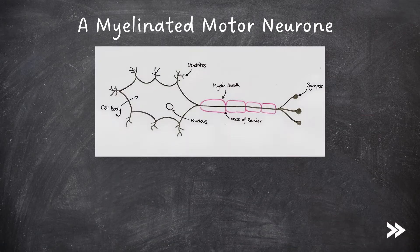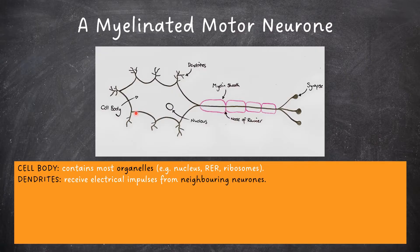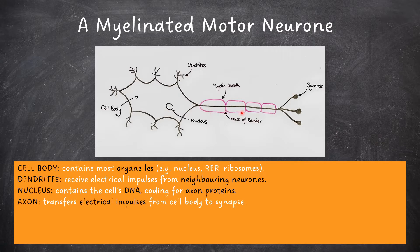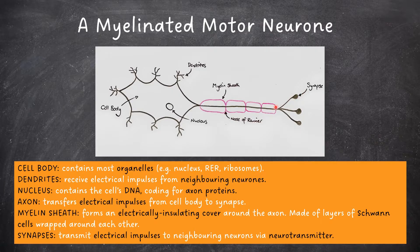First of all, we need to know the structure of a myelinated motor neurone. Here on the left we have the cell body which contains the most organelles such as the nucleus, the rough endoplasmic reticulum, and ribosomes. At the sides of the cell body we have things which look like tiny fingers called dendrites. Dendrites receive electrical impulses from neighbouring neurons. The nucleus is found within the cell body and contains the cell's DNA coding for axon proteins. We have the axon which transfers electrical impulses from the cell body to the synapse. The myelin sheath forms an electrically insulating cover around the axon — it's made of layers of Schwann cells wrapped around each other — and finally we have synapses which transmit impulses to neighbouring neurons via neurotransmitters.